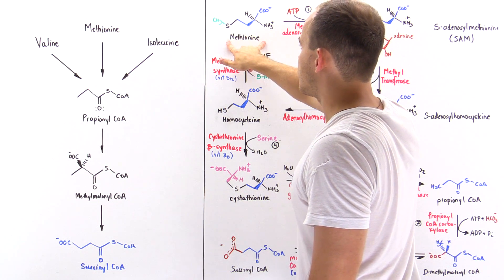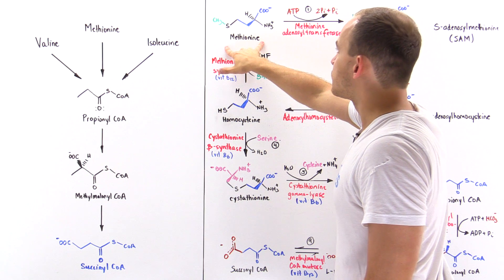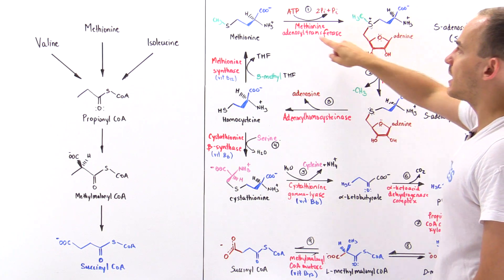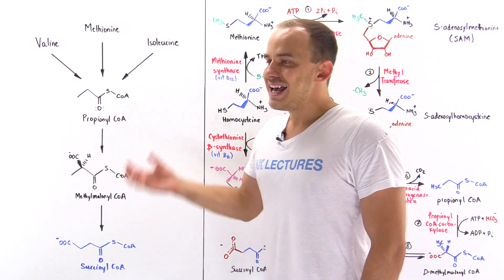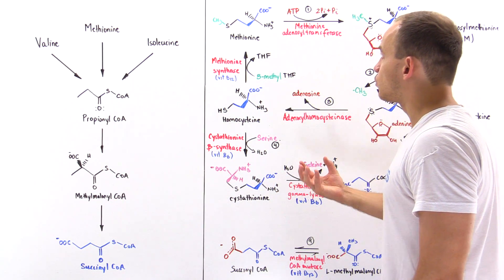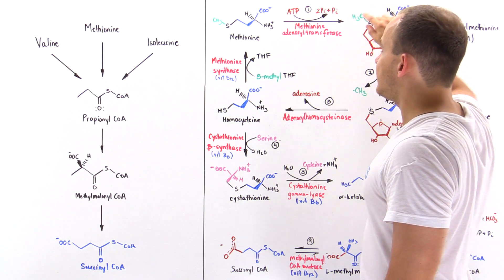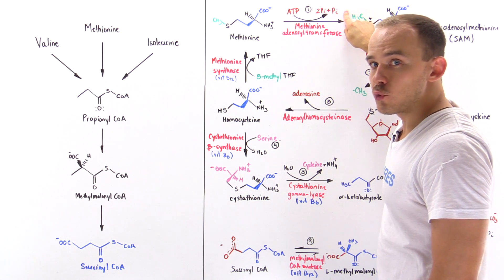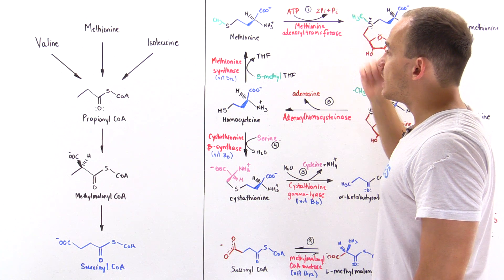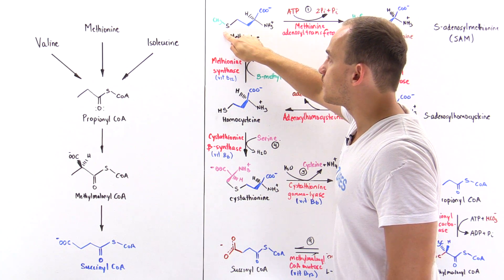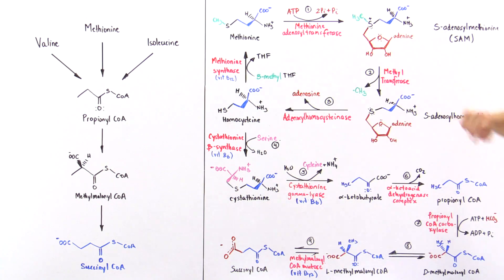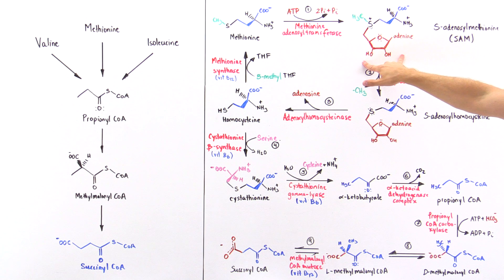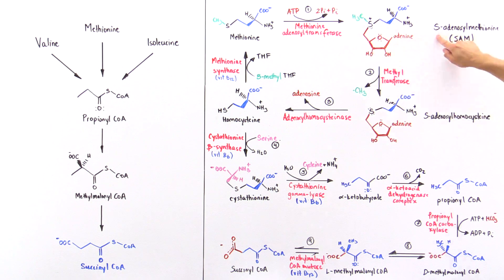Step one is catalyzed by methionine adenosyl transferase. What this enzyme does is it takes an adenosine group from ATP — it kicks off those phosphate groups and attaches that adenosine onto the sulfur. That creates a positive charge on that sulfur. The product of step one is called S-adenosyl methionine, or simply SAM.